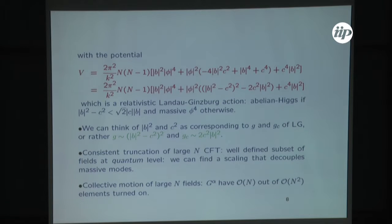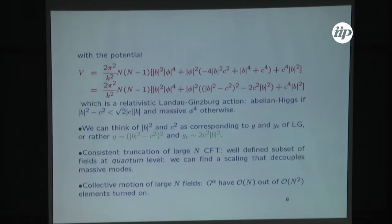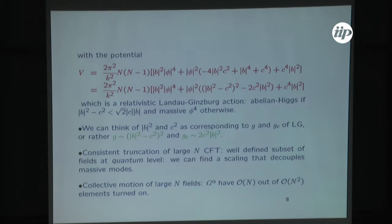Moreover, the truncation I described is consistent at the quantum level: we can find a scaling that decouples the massive modes, so even in loops we do not see them. In other words, this relativistic Landau-Ginzburg is really a low energy effective theory for some modes — in the same way as one thinks in a condensed matter system that the Landau-Ginzburg is really an effective low energy theory for some complicated Hamiltonian.